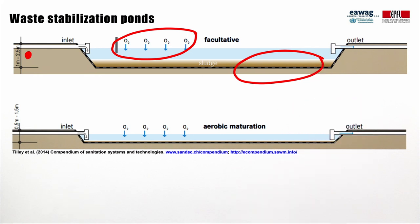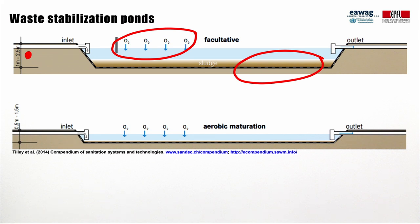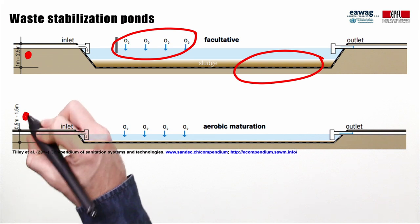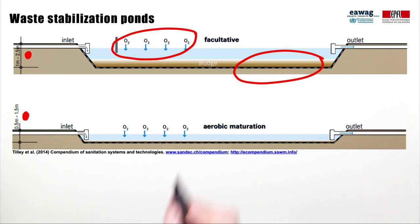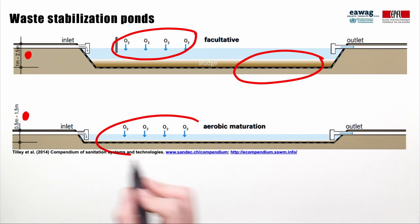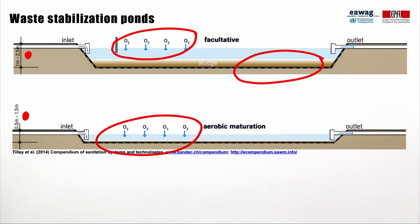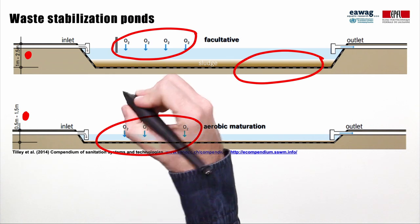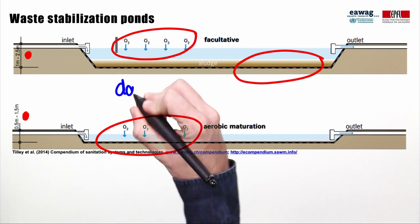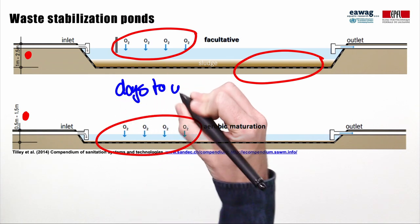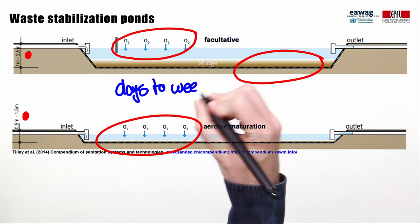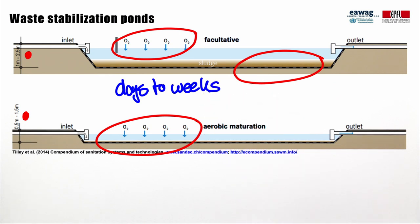At Demagete, maturation ponds follow these facultative ponds. Maturation ponds usually have a depth of 0.5 to 1.5 meters, are aerobic, and are designed for inactivation of pathogens. The hydraulic retention time in these ponds is usually several days to weeks, which explains why they are land-intensive and require significant space.